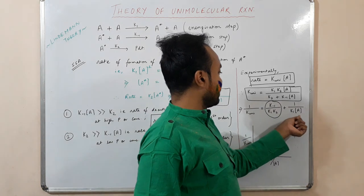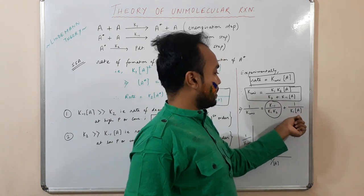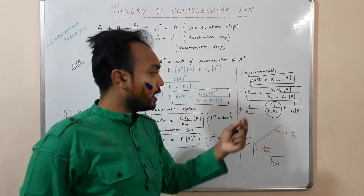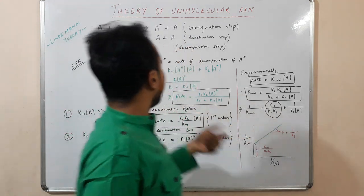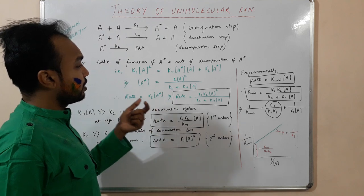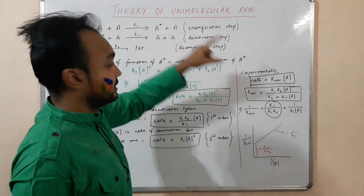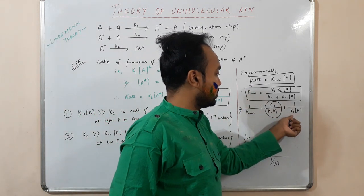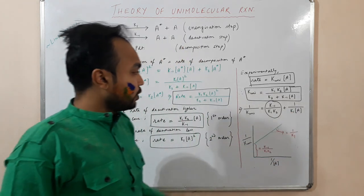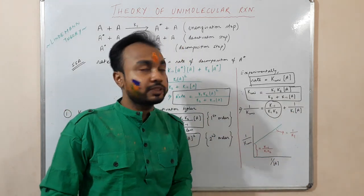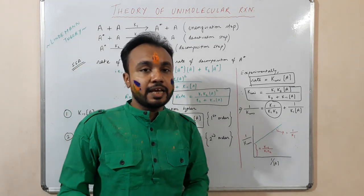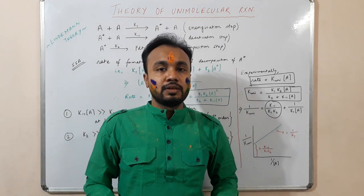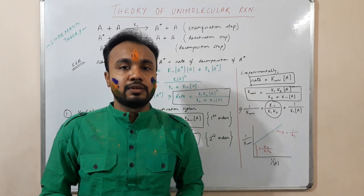For example, they may give you the concentration of A and two rate constant values, then ask you to find the rate constant of the energization step, K₁. I will solve some numericals based on this theory of unimolecular reactions in the next video. That's all for this video — if you like it, please like, share, and subscribe to our channel. Thank you.